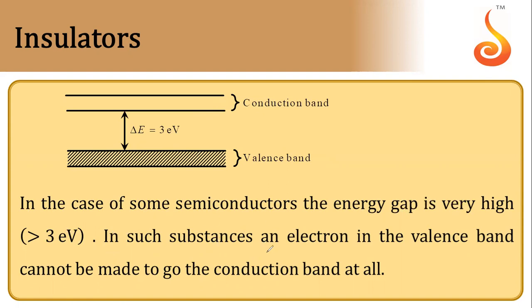In such substances, an electron in the valence band cannot go to the conduction band because it requires a very large amount of energy to do so. That is why insulators are bad conductors of electricity — because if the electron were able to reach the conduction band, it would start conducting electricity.